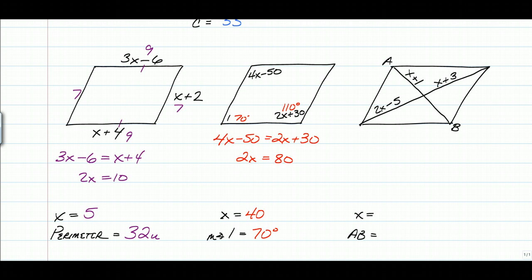The last example. This deals with the diagonals. You have to remember, the diagonals cut each other in half. The diagonals of a parallelogram are not always congruent. So we know those two are congruent, and we know these two are congruent. So we can go ahead and set 2x minus 5 equal to x plus 3. So x is going to be equal to 8. To find the length of AB, all we have to do is substitute 8 into x plus 1. So we know this is 9 and this is 9, so the length of AB is 18. And there you go. Now you are applying the properties of a parallelogram and solving using algebra.